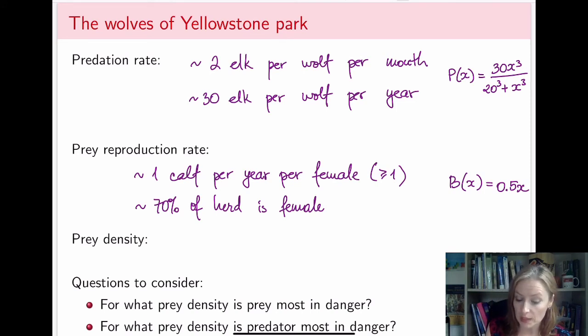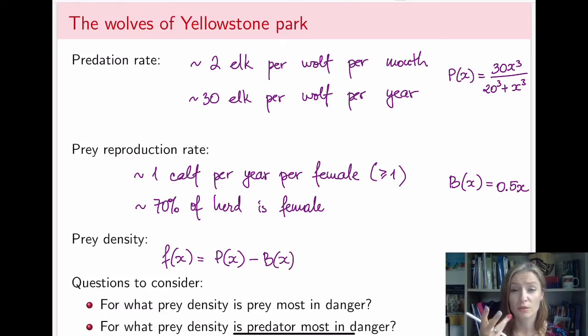So for prey density, we have that the contributing factor to the prey is the reproduction factor, and the predation actually takes some of the prey away, right? So for the function that we're interested in is, let's say, the predation rate minus the birth rate.